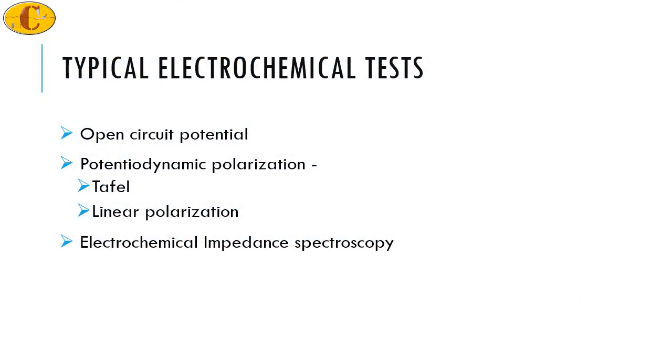The typical electrochemical tests which are carried out for corrosion testing are open circuit potential, potentiodynamic polarization, which means that there is a change in potential and we measure the current, and electrochemical impedance spectroscopy. The common point in all of these is we measure the potential.